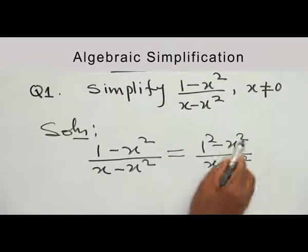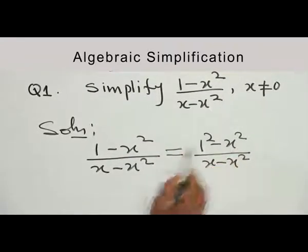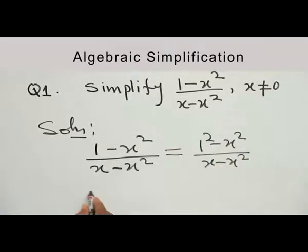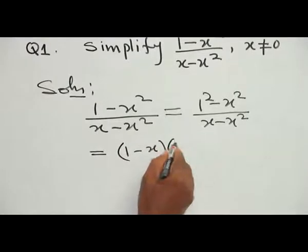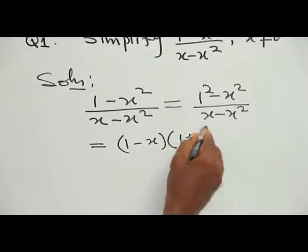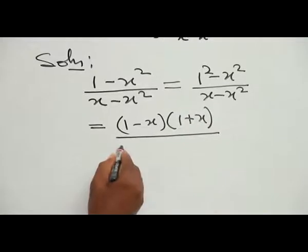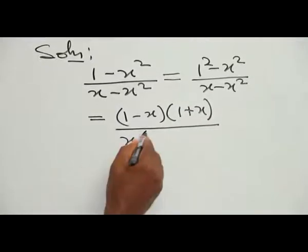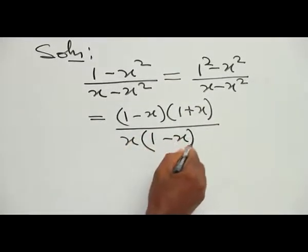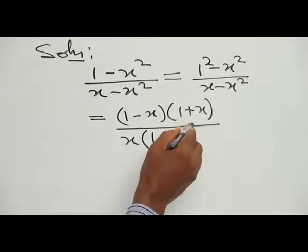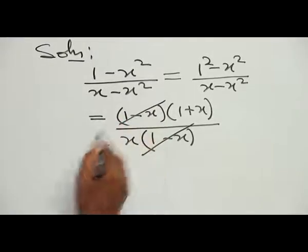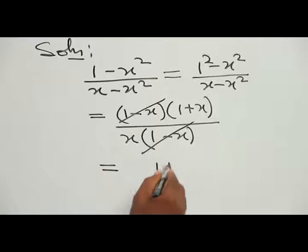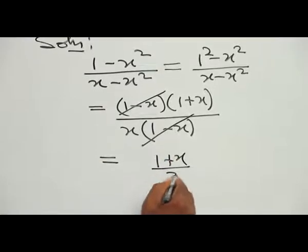We can see the difference of two squares in this expression, which gives us (1 minus S)(1 plus S). The denominator has S as a common factor, leaving S(1 minus S). We can see that (1 minus S) in the numerator and (1 minus S) in the denominator cancel. This eventually leaves us with (1 plus S) all over S.